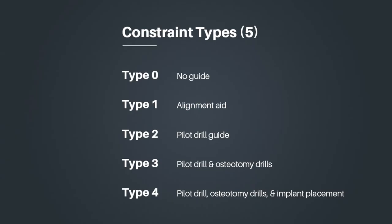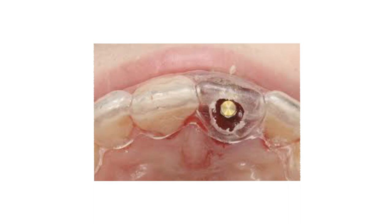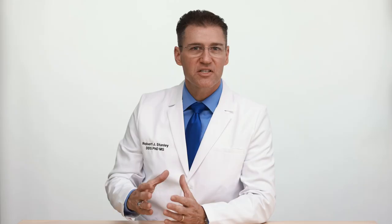Next up, we have a type 1 guide. This is a visual aid. Type 1 guides often take the form of a suck-down with a hole in it. If you get the implant coming out generally in that area, you're better off than not. The type 1 guide doesn't include constraints of any kind — it's just a visual aid.